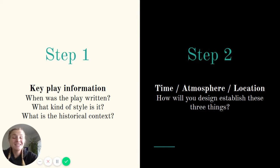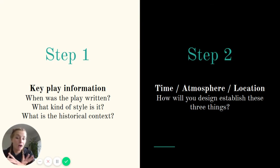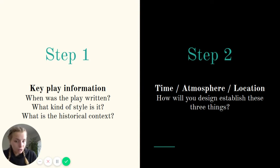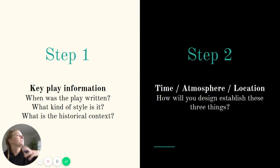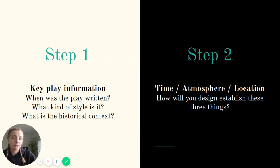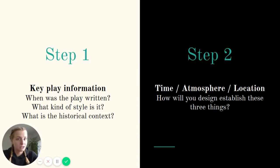Step one: the first thing you need to do is have an understanding of the play as a whole, because the 14 marker is asking you about the entire play and your ideas for the whole thing. You need to know when the play was written, the style it is, the historical context — when was it written, when was it first performed, how are those different, how would it first have been performed, and what's the world the play is set within. You need a really good understanding of those base ideas, and then on top of that, the writer's intentions and purposes — what's the writer doing this for, and what message are they trying to convey? Once you've got all of that, you can move on to step two.